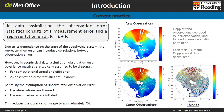As a reminder, in data assimilation the observation error statistics don't just consist of the instrument error associated with our measuring instrument, but also include representation error. This exists because our model and observations have different spatial and temporal scales, because observation operators may be approximated, and because we do a lot of processing to our observations. Because of all those sources of uncertainty, there's a dependence on the state of the geophysical system, and this representation error can often be correlated between different observation errors.